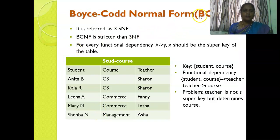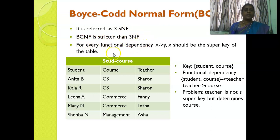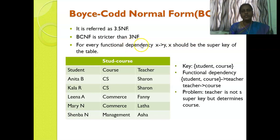Boyce-Codd normal form, also called BCNF, is referred to as 3.5 normal form. It is stricter than third normal form. The rule is: for every functional dependency X determines Y, X should be the super key of the table.